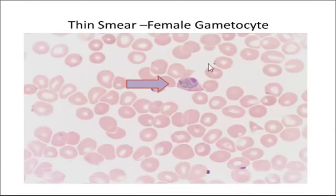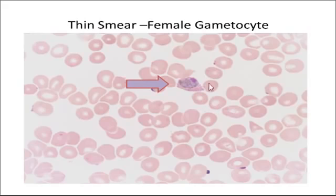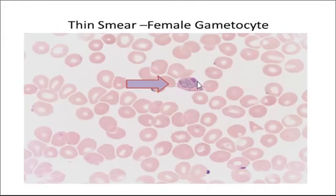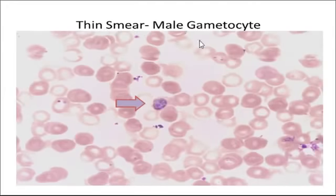This shows a female gametocyte. It is not really necessary to identify whether it is female or male in routine smear reading, but for educational purposes: the female gametocyte is also called a macrogametocyte. It has a round to oval cytoplasm and an eccentric chromatin dot — you can see the eccentric pink chromatin dot — and the round oval cytoplasm is quite evident. Schüffner's dots are also visible.